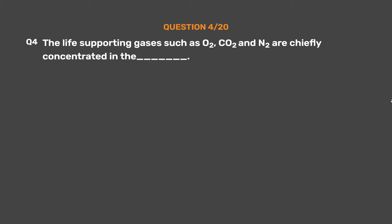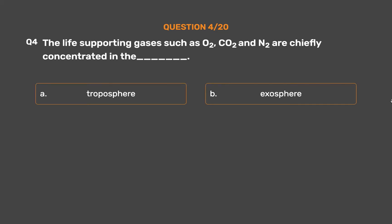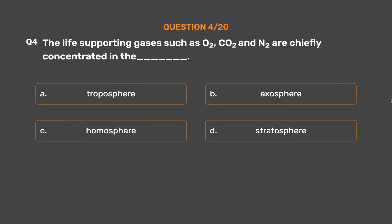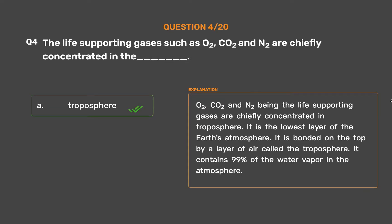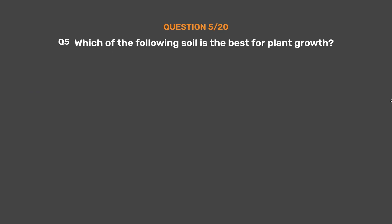Question number four: the life-supporting gases such as O2, CO2, and N2 are chiefly concentrated in the underscore. Option A: troposphere. Option B: exosphere. Option C: homosphere. Option D: stratosphere. The correct answer is option A, troposphere. O2, CO2, and N2, being the life-supporting gases, are chiefly concentrated in the troposphere. It is the lowest layer of the Earth's atmosphere, and it contains 99% of the water vapor in the atmosphere.